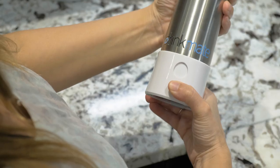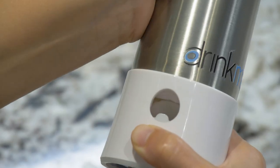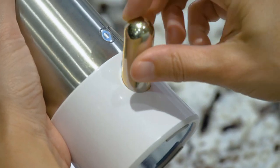Turn the bottom clockwise to open the cartridge window and insert an 8 gram Drinkmate cartridge.